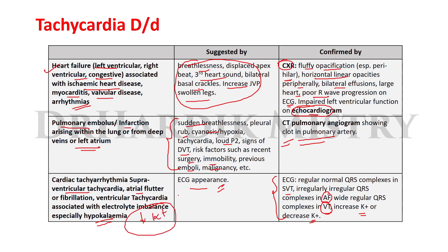To summarize the remaining tachycardia differentials: heart failure, pulmonary embolus or infarction, and cardiac tachyarrhythmia — including supraventricular tachycardia, atrial flutter, atrial fibrillation, and ventricular tachycardia — particularly associated with electrolyte imbalance such as hypokalemia.